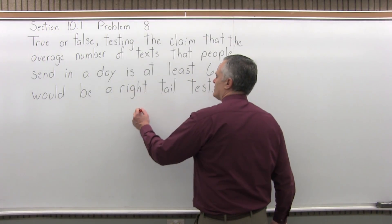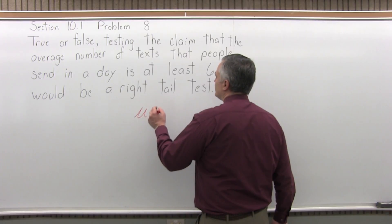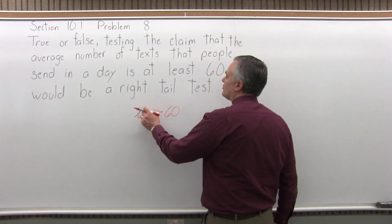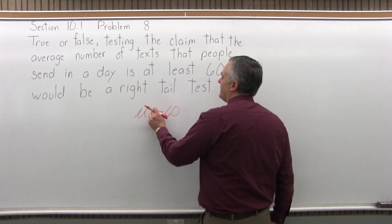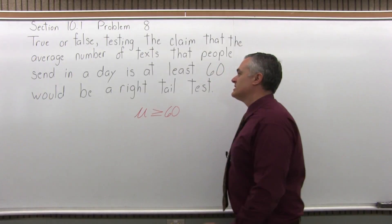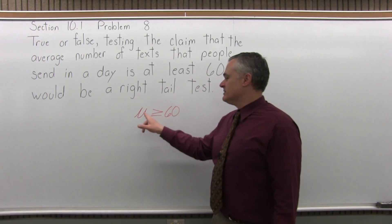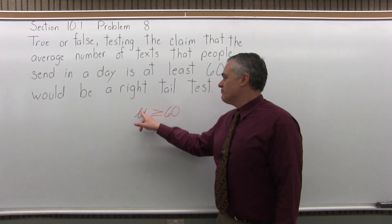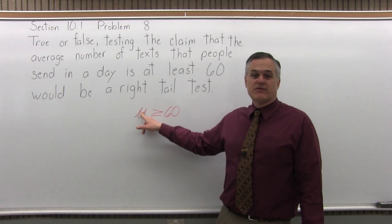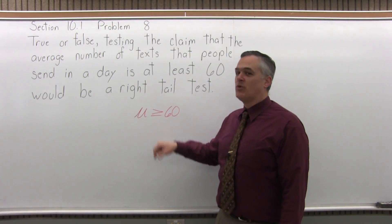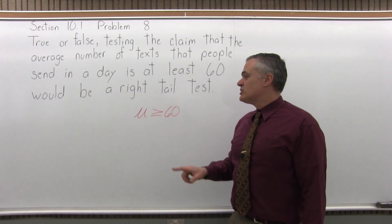So the average — and we're interested in the population average — is at least 60. At least: 60 is the least, so the real number is 60 or bigger. So if you say the average for all people that have cell phones could be 63, even 71 — it's 60 or more. That's what we're saying.